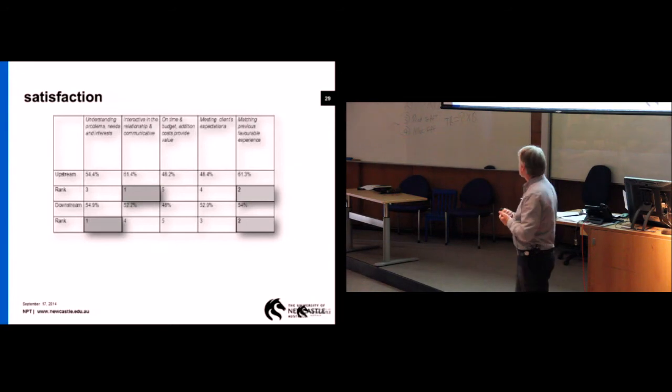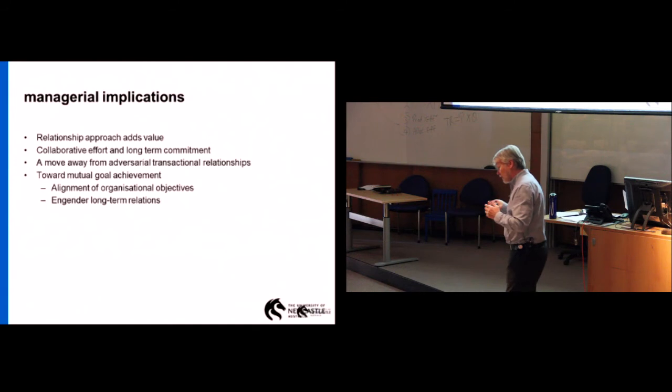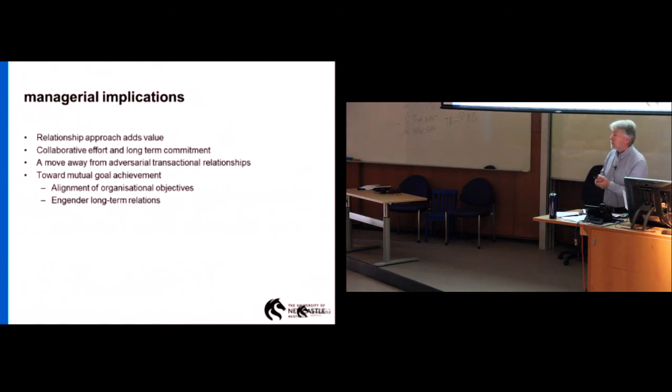Confidential information sharing is important because it is a key indicator of trust. If you're going to give some sort of confidential information to a third party, you want to know that you can trust them. You can see on this slide where the key indicators of satisfaction lie. The whole group that I surveyed, all that 900 organizations, they identified ranking upstream: interactive, relationship, communicative. They identified the second one as matching previous favorable experience. They were interested in fairly intangible issues associated with project selection.